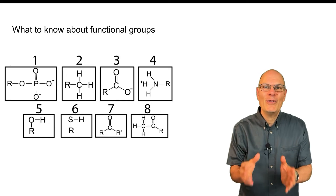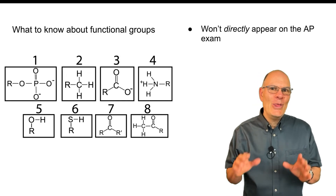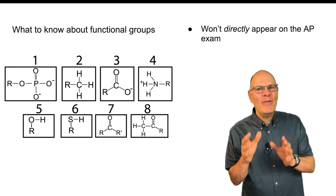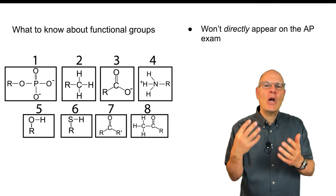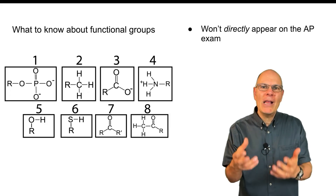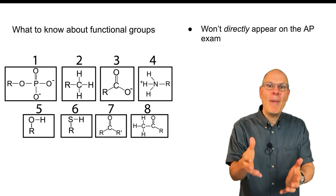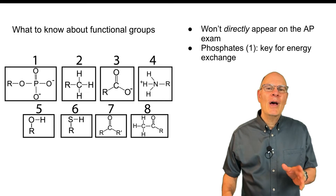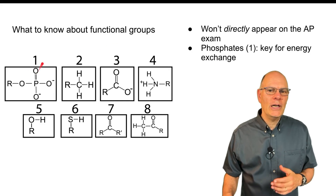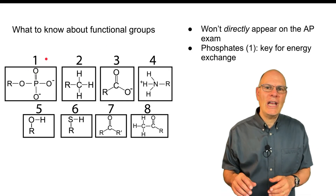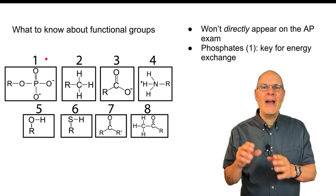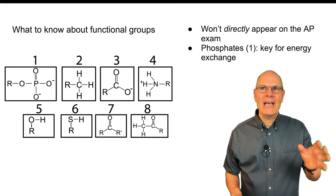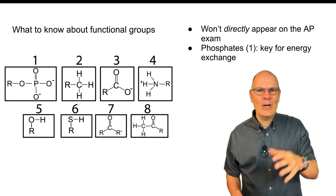What do you need to know about functional groups? They won't directly appear on the AP Bio exam, but they're very important for decoding what's happening with the molecules in biology. Phosphate groups are key for energy exchange — ATP, adenosine triphosphate. Phosphates are also found in DNA, and they energize DNA monomers as they're put together. The methyl group is used to silence DNA and makes molecules non-polar or hydrophobic.